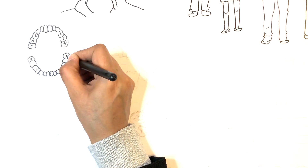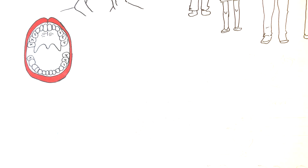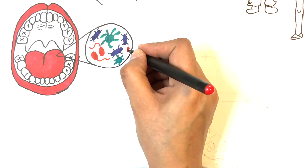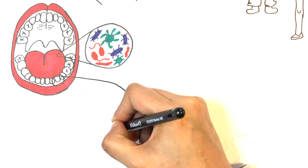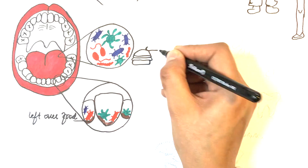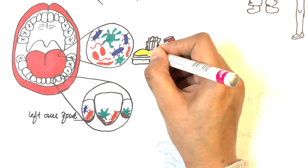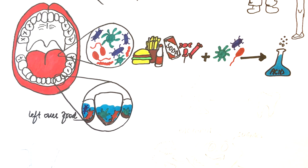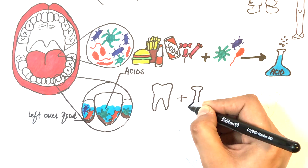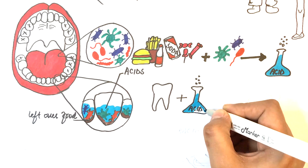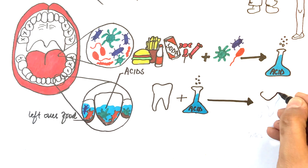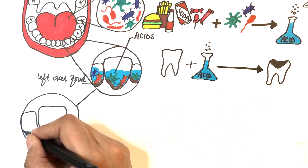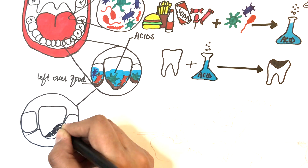Our oral cavity, which comprises the soft tissues and teeth, is full of numerous types of microbes. These microbes use the leftover food on our teeth as a substrate for their energy production and produce acids as a byproduct. These acids, when left for a long period, attack the outer surface of our teeth called the enamel and start the demineralization or decalcification process, hence a cavity or a hole is produced.